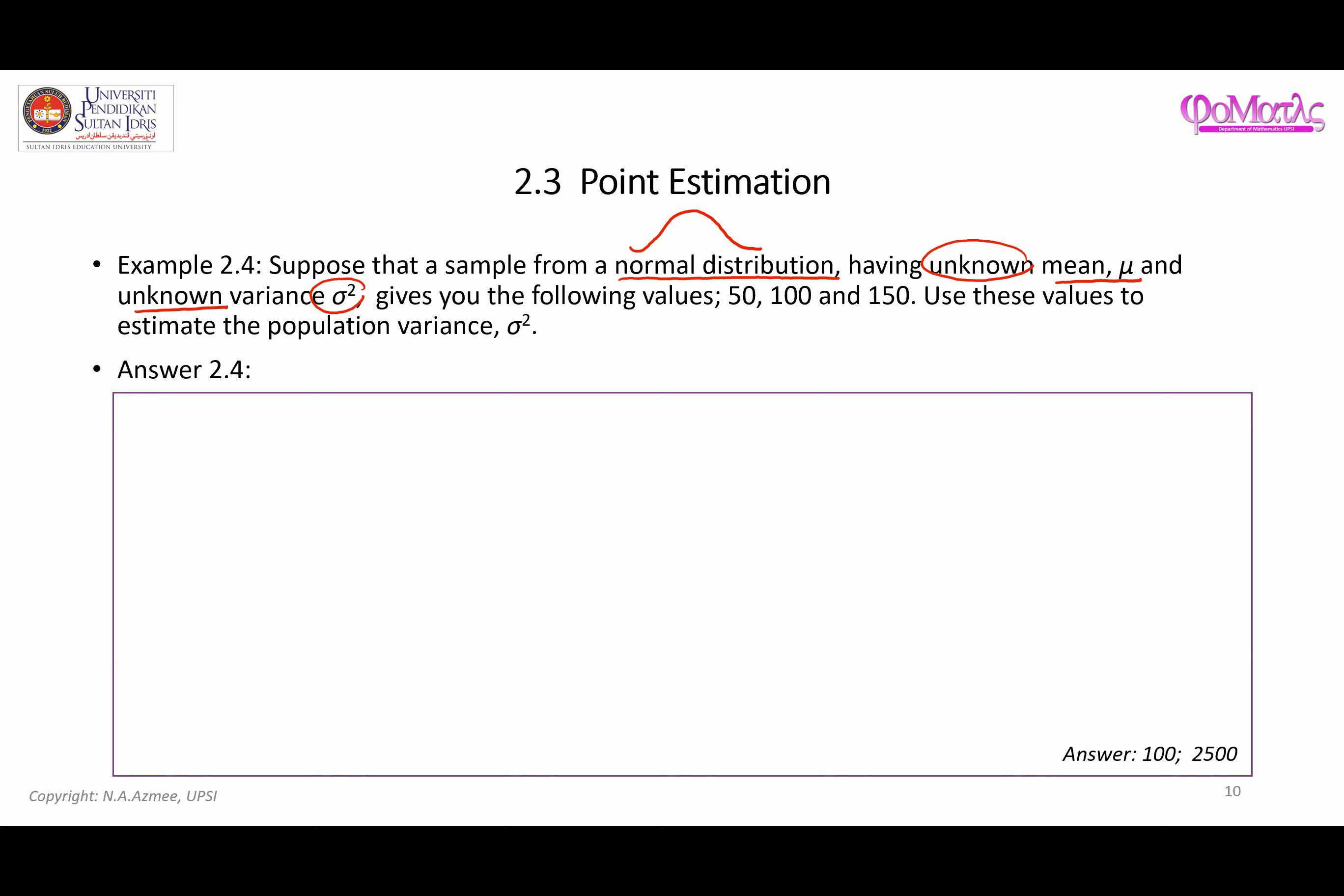The sample here, we only have three data values. So the sample is 50, 100 and 150. Use these values to estimate the population variance. In order to estimate the population variance, we know that based on our previous lecture note, the population variance can be estimated by calculating the sample variance.